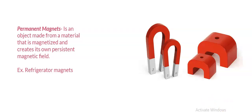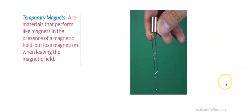Now temporary magnets are materials that perform like magnets in the presence of a magnetic field but they lose magnetism when leaving the magnetic field.